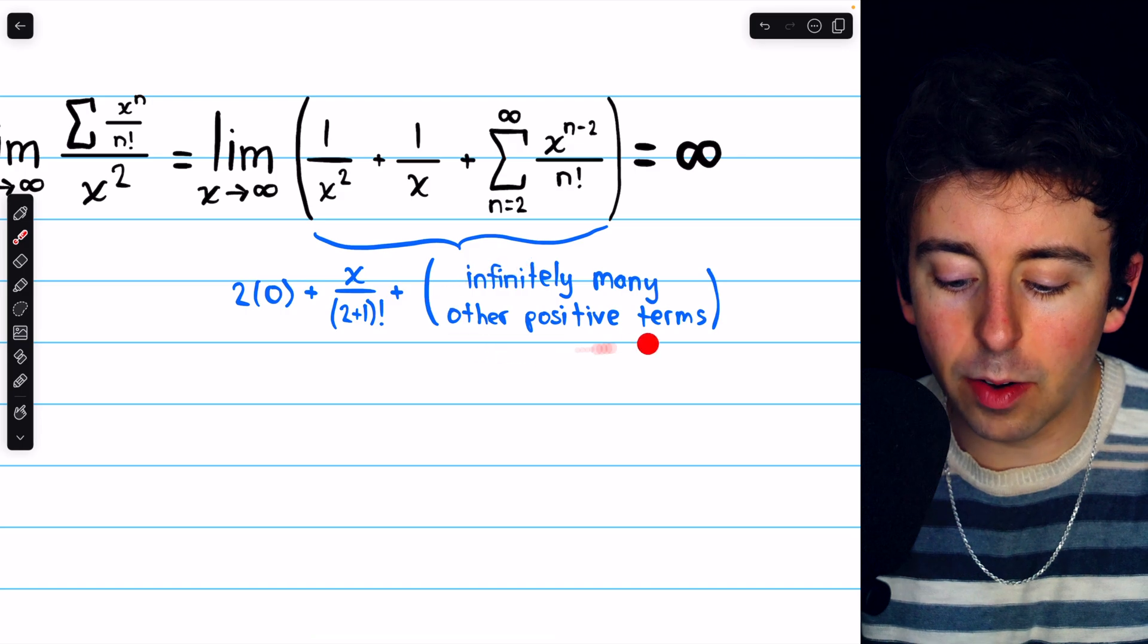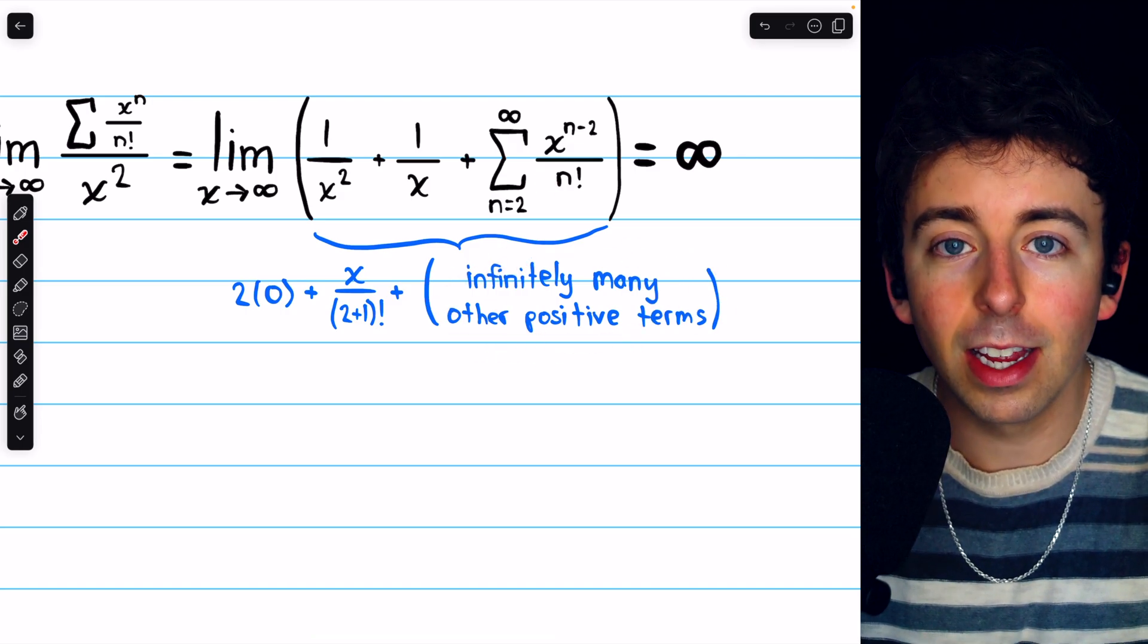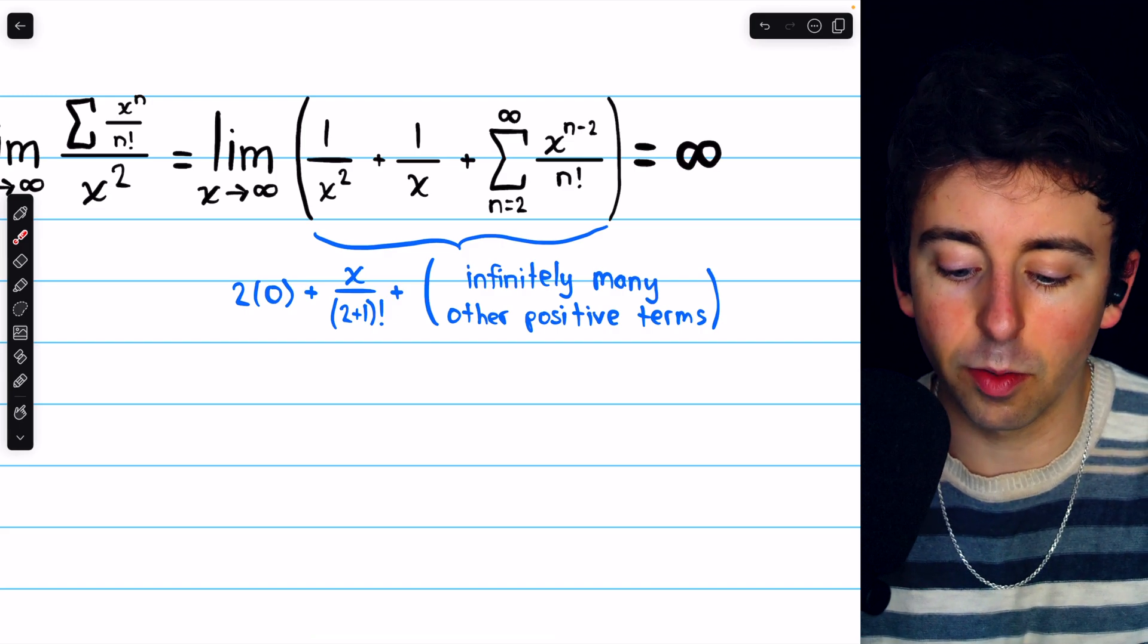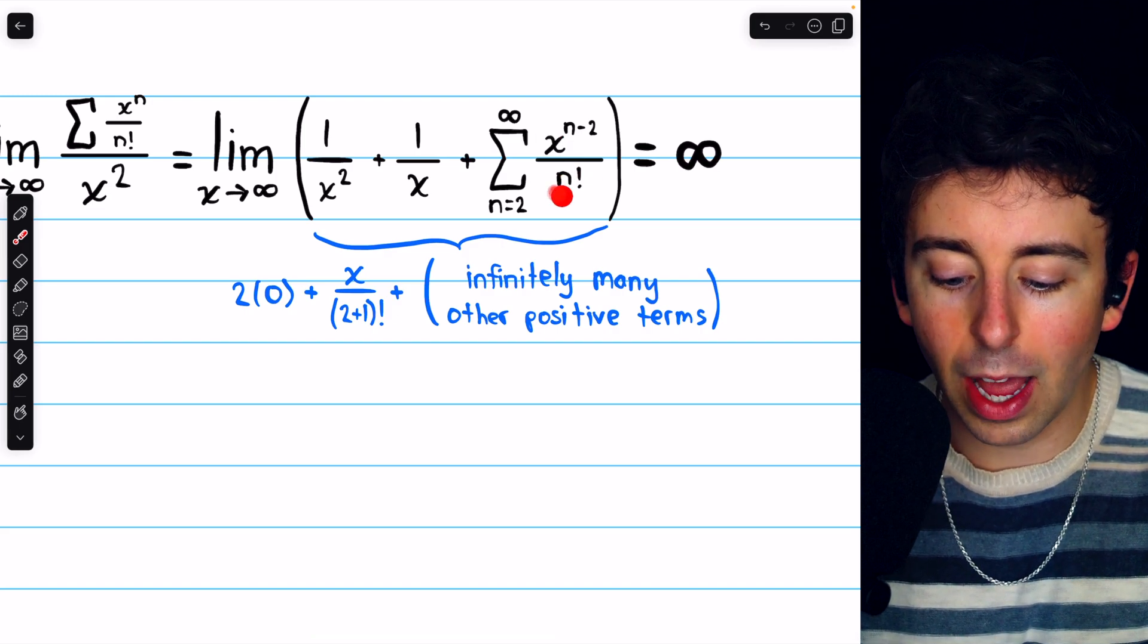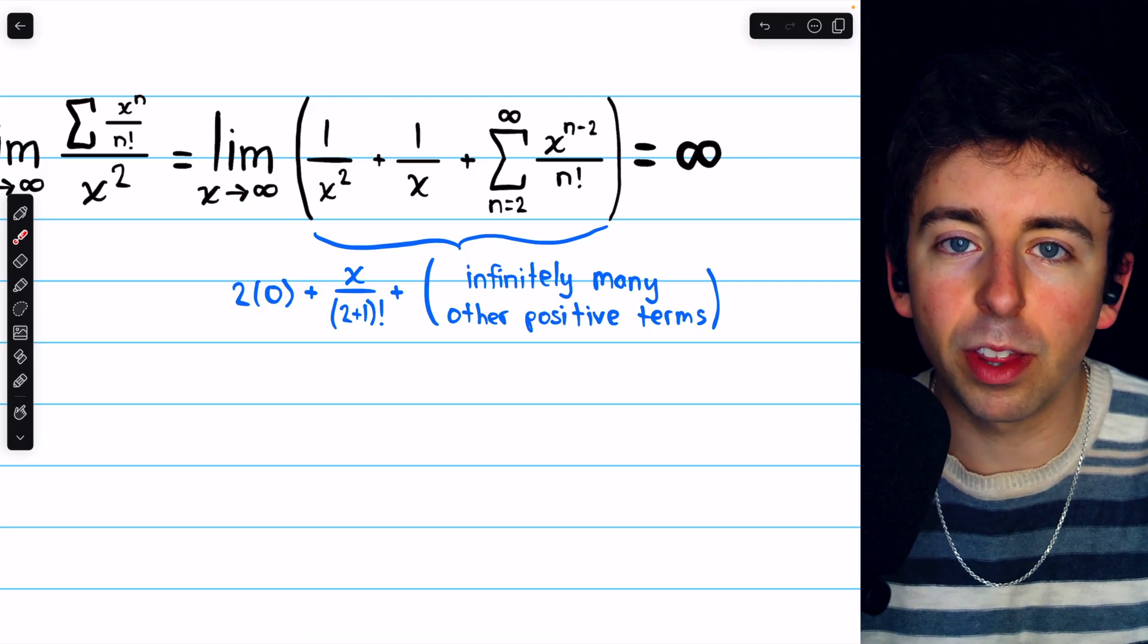Aside from that, we would have infinitely many other positive terms throughout the rest of this series. The terms are positive because they all just consist of x to some power divided by a factorial. And x is going to infinity, so everything here is positive.